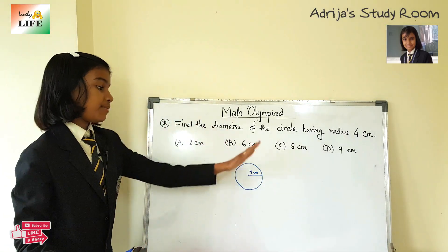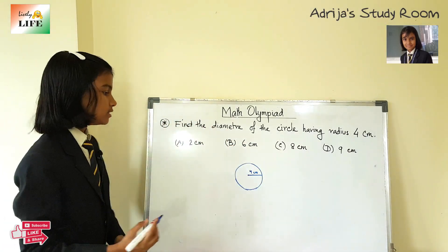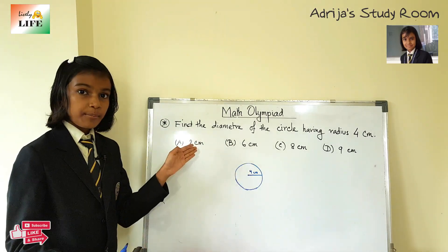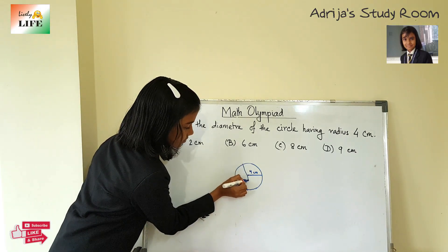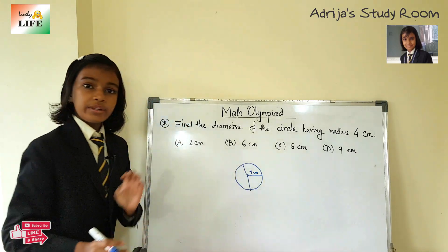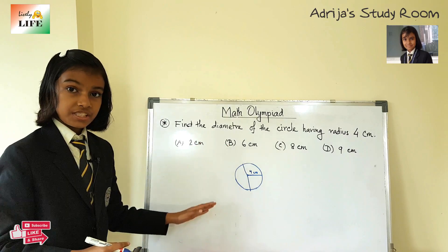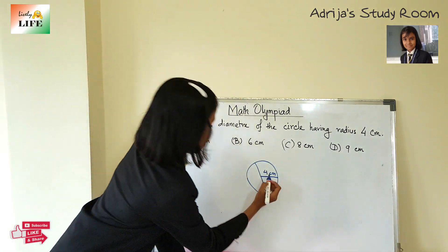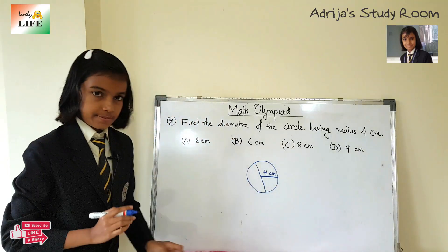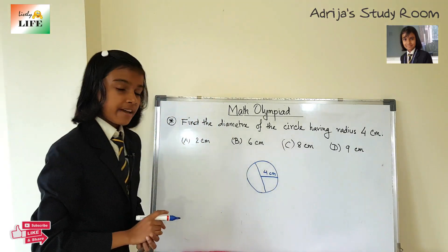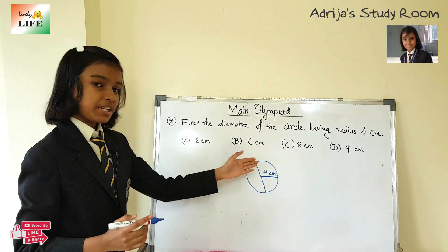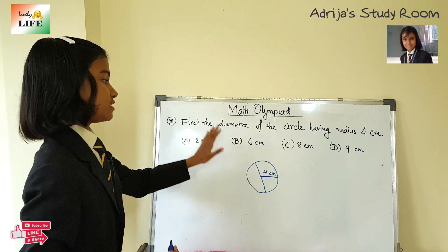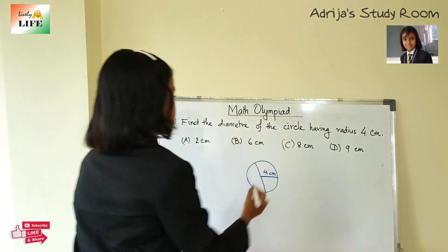We have to find the diameter of this circle. We know that a radius is half of the diameter, and a diameter is double of the radius. So if the radius is 4 centimeters, then we have to multiply by 2. So 4 into 2 is 8, meaning the diameter of this circle is 8 centimeters.